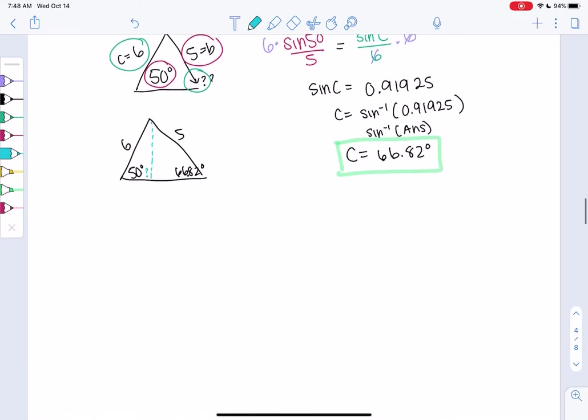So let's check the supplement. We only have to do this for the ambiguous case. All the other cases aren't this bad. So the supplement is 180 minus 66.82. I got 113.18.